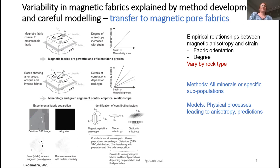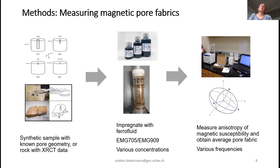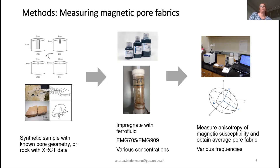Before going into that, a quick overview of how we measure magnetic pore fabrics. First we have a sample — it could be synthetic or a rock sample where we know something about the pore space, for example from x-ray tomography data. We then impregnate that sample with ferrofluid. We can use different types of fluids and different concentrations, and then measure the anisotropy of magnetic susceptibility, which gives us an average pore fabric. We've done these measurements at various frequencies, and we'll see towards the end of this talk why that is important.